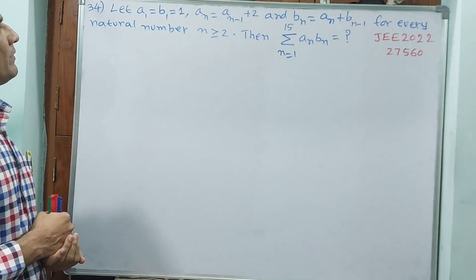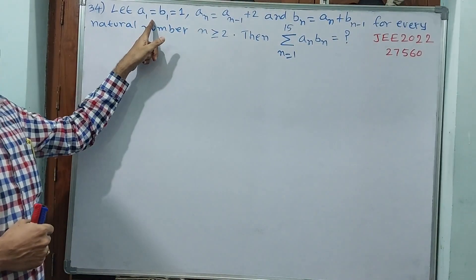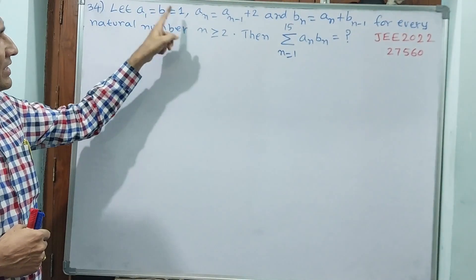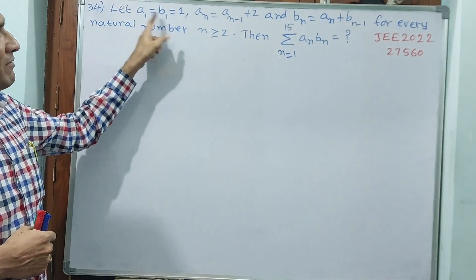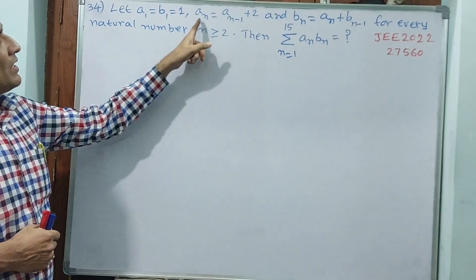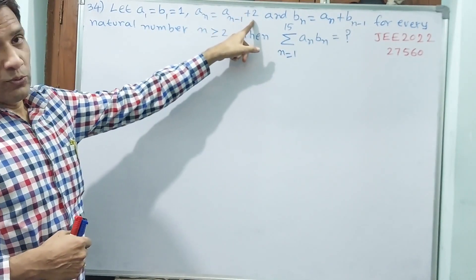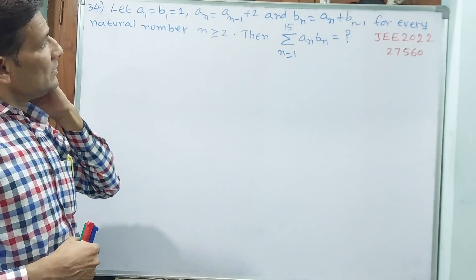Okay, see question number 34. Let a1 is equal to b1, that is equal to 1. That means a1, b1 values are 1. But a_n is equal to a_(n-1) plus 2.